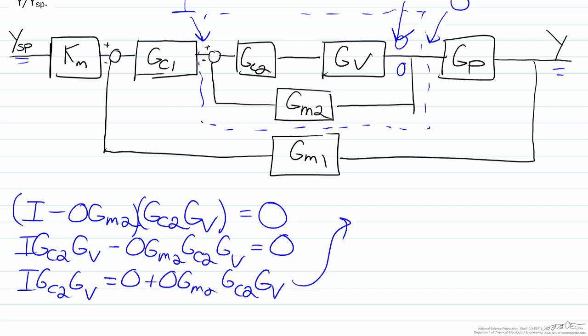By doing some algebra we can easily find that the transfer function O over I, which is what we are trying to find here, would equal Gc2 Gv divided by 1 plus Gm2 Gc2 Gv.